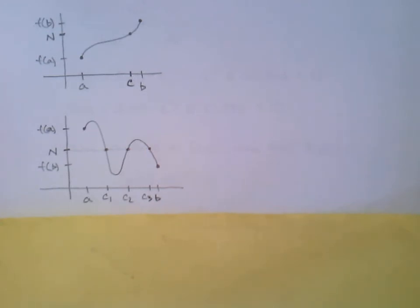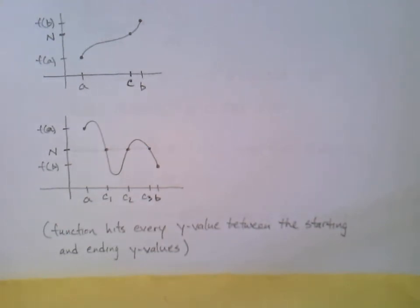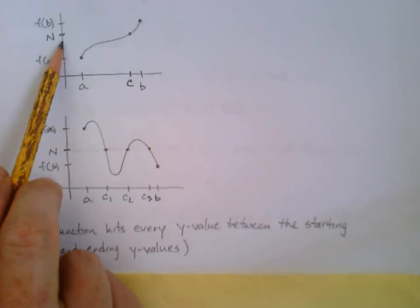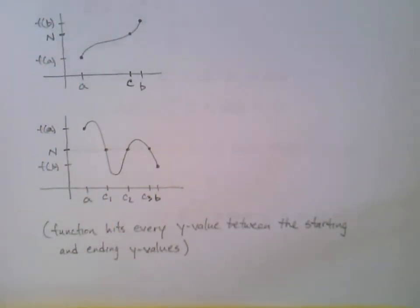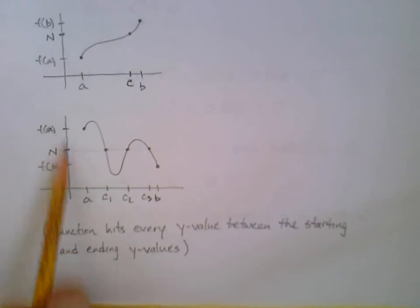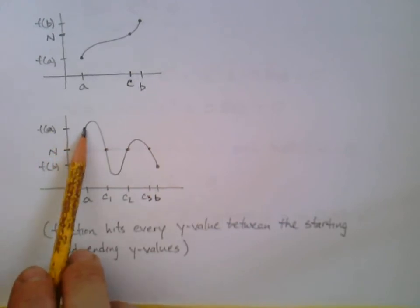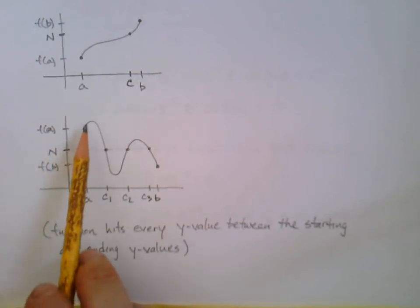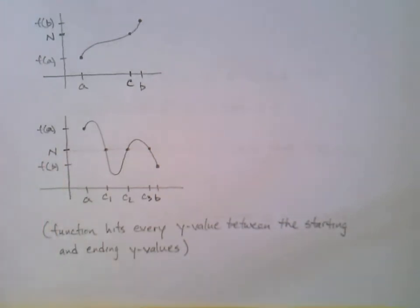Another way to state this theorem: the function hits every y-value between the starting and ending y-values. If it's continuous and connects those two points, doesn't it have to hit every y-value in between? Of course — if I connect f(a) and f(b) with a continuous curve, it has to hit every y-value in between, and it might hit some of them more than once.